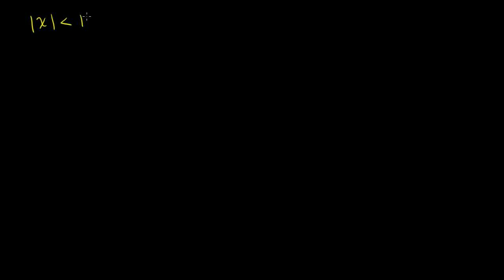Let's start with the absolute value of x is less than 12. Remember what absolute value means — it means how far away you are from 0. So one way to say this is: what are all of the x's that are less than 12 away from 0? Let's draw a number line. If we have 0 here, and we want all the numbers that are less than 12 away from 0...